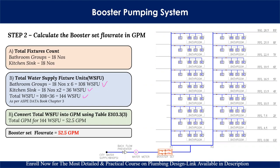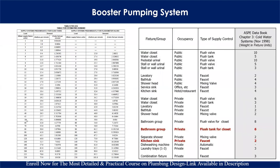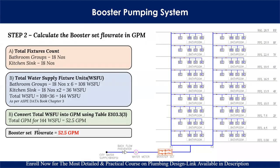The next step is to convert 144 WSFU into GPM using table 103.3. Looking at the table, we have values at 140 and 160. For 140, the flow rate is 52.5 GPM. So for 144 WSFU, the total flow rate is 52.5 GPM. This means the booster set flow rate will be 52.5 GPM. This completes step two.